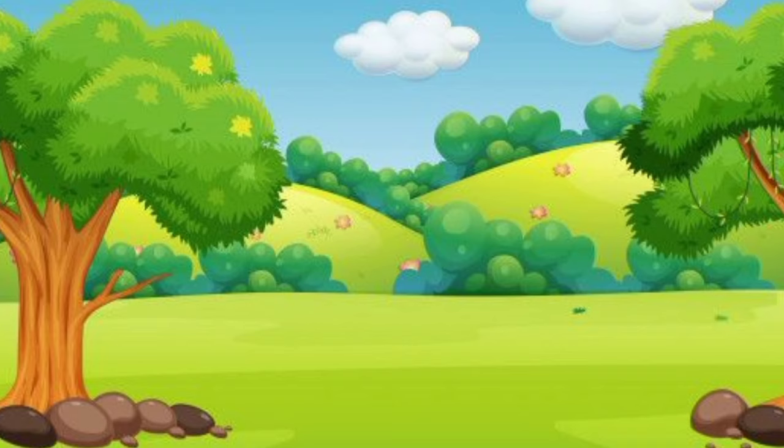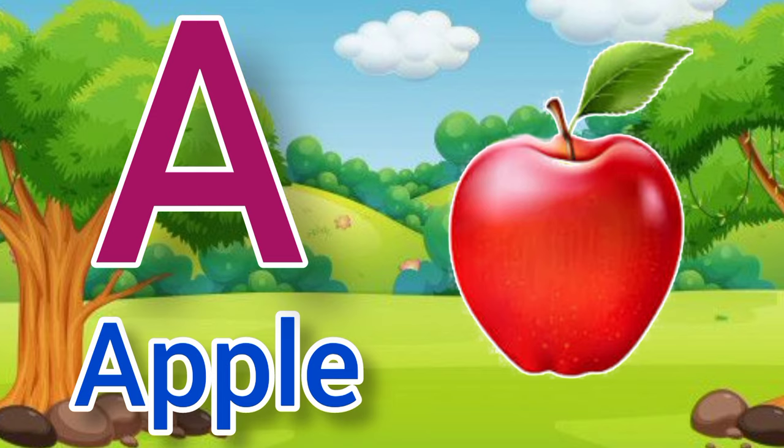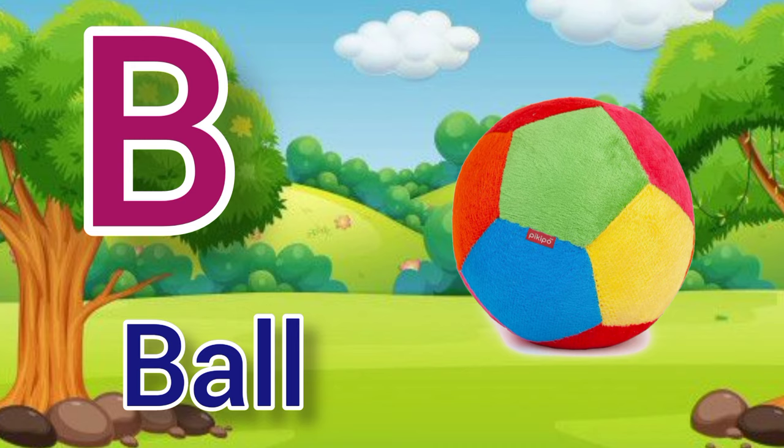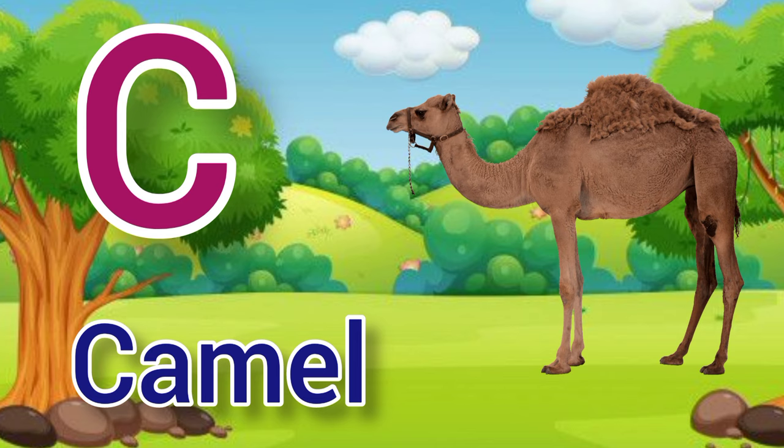A. A for apple, apple means shape. B. B for ball, ball means game. C. C for camel, camel means oot.